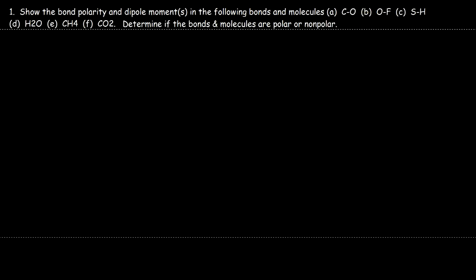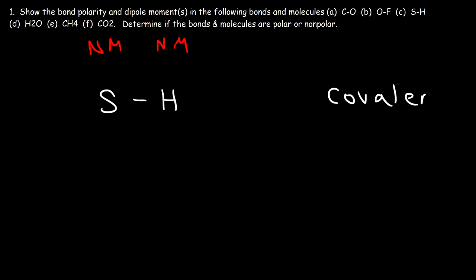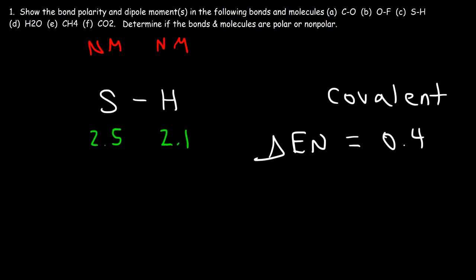Now let's move on to part C, the sulfur-hydrogen bond. Sulfur is a nonmetal and hydrogen is a nonmetal, so this will be a covalent bond. By the way, if we had a metal and a nonmetal, it would typically represent an ionic bond. Hydrogen has an electronegativity value of 2.1 and sulfur is about 2.5. The electronegativity difference is 0.4, which means the hydrogen-sulfur bond is relatively nonpolar — a nonpolar covalent bond.